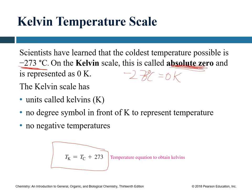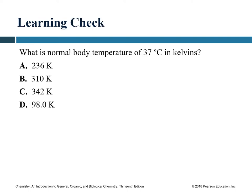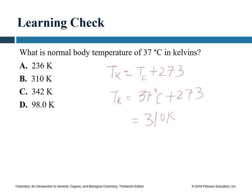For example: normal body temperature is 37°C — what is that in Kelvin? Using T_K = T_C + 273: T_K = 37 + 273 = 310 K. Our final answer is 310 Kelvin.